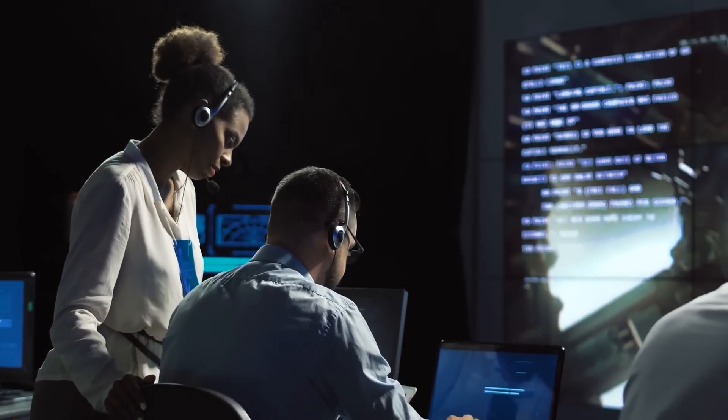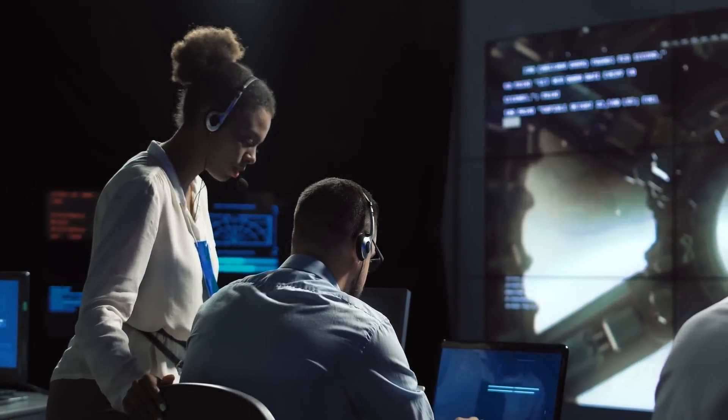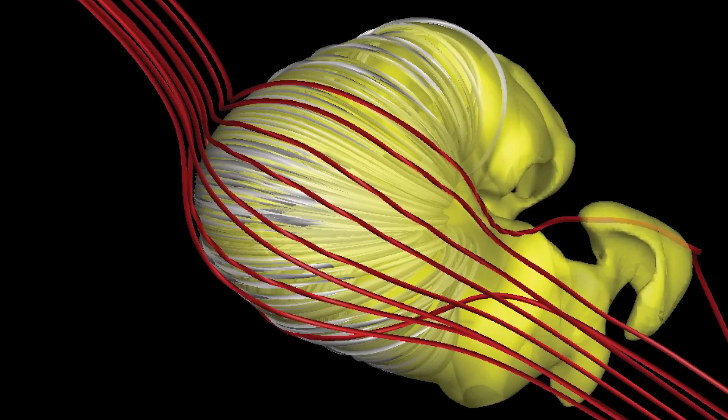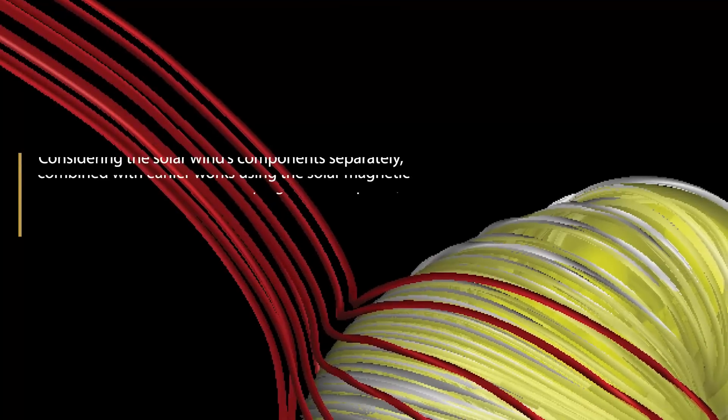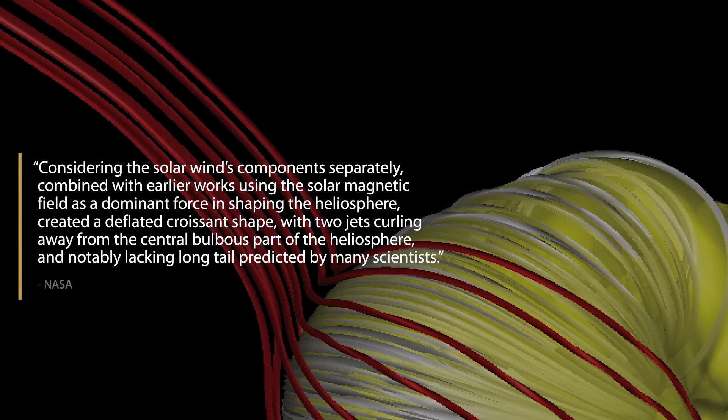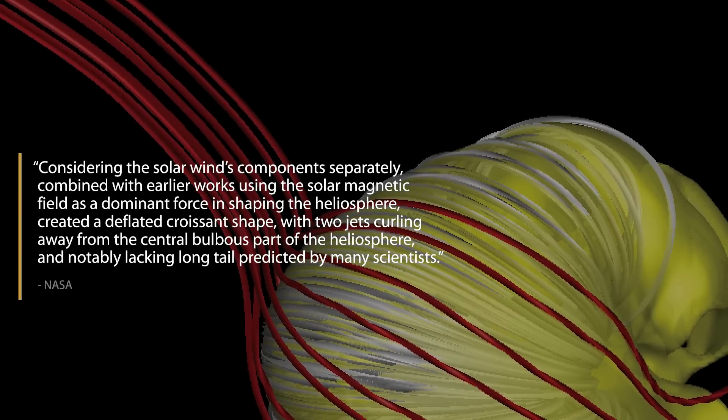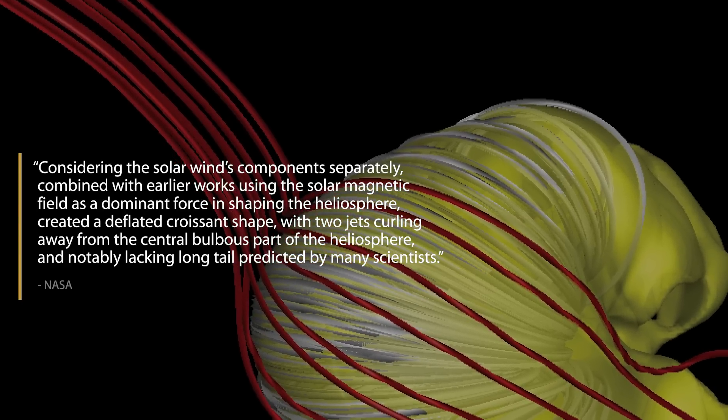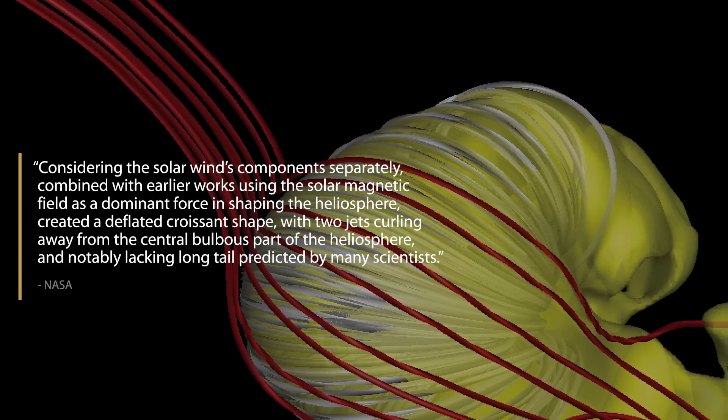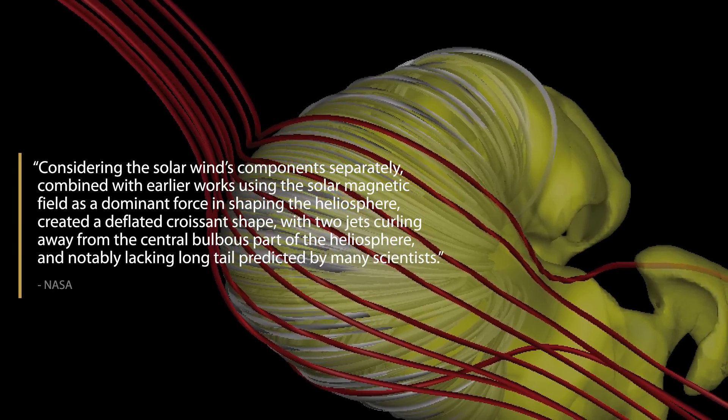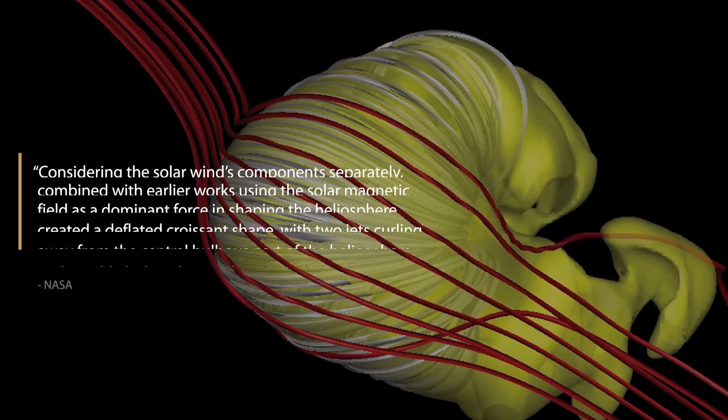So what they did was to separate these two components of the solar wind and model the resulting 3D shape of the heliosphere. As we can read on NASA's website, considering the solar wind's components separately, combined with earlier works using the solar magnetic field as a dominant force in shaping the heliosphere, created a deflated croissant shape, with two jets curling away from the central bulbous part of the heliosphere and notably lacking the long tail predicted by many scientists.